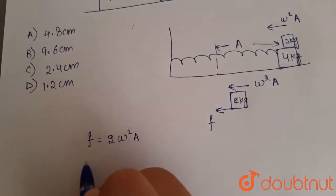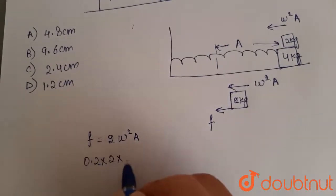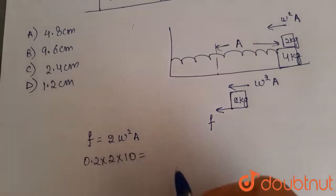Where friction can be written as 0.2 into 2, I am considering G to be 10. So this turns out to be 2.